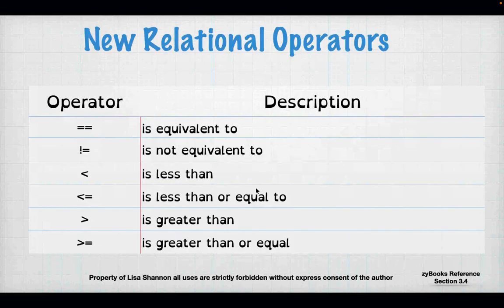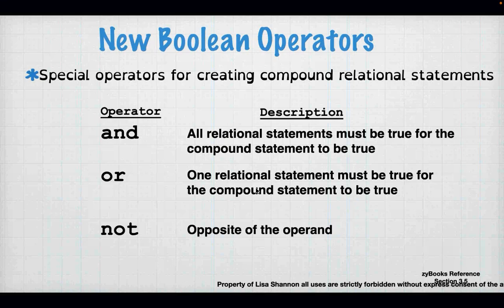We're going to use relational operators. The relational operators are: == (equivalent to) — remember, a single equal sign assigns a variable, while a double equal sign is a comparison; != (not equivalent to); less than; less than or equal to; greater than; and greater than or equal to.